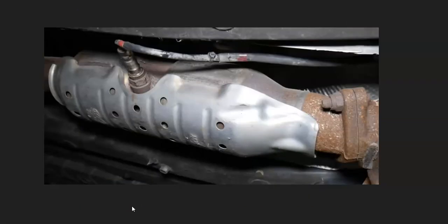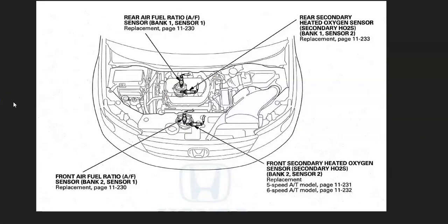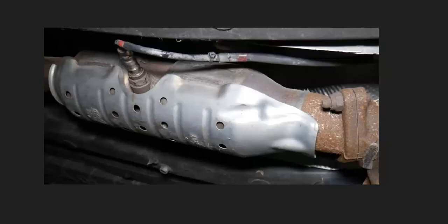The next thing that can cause this problem is a bad oxygen sensor, mainly sensor 2. There can be differences in where the sensors are located depending on the type of Honda and the year. For example, on a 2012 Honda Odyssey, Bank 1 is back here up against the firewall. With the P2096 code it usually points to sensor 2, although these sensors do work together, so it's best to check both of them. Locate the Bank 1 oxygen sensors and either test them or replace them.